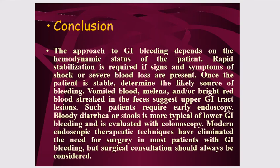In conclusion, the approach to GI bleeding depends on the hemodynamic status of the patient. Rapid stabilization is required if there are signs and symptoms of shock or severe blood loss. Once the patient is stable, determine the likely source of bleeding. Hematemesis, melena, or bright red streaks in the feces suggest upper GI bleed requiring early endoscopy. Diarrhea with blood-stained stools is more typical of lower GI bleed and is evaluated with colonoscopy. Modern endoscopic therapeutic techniques have eliminated the need for surgery in most patients, but surgical consultation should always be obtained.